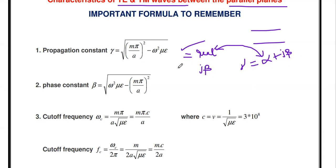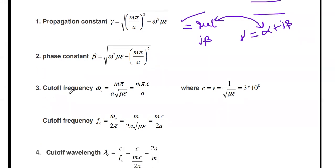The phase constant β equals the square root of ω²με minus (mπ/a)², which is derived by factoring j out of the propagation constant expression. This is the phase constant formula.